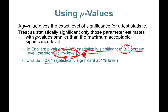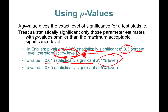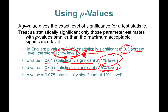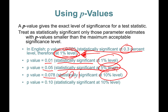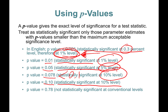A p-value of 0.04 — you can say B-hat is statistically significant at the 1% level. A p-value of 0.05 means this statistic is significant at the 5% level. A p-value of 0.078 is statistically significant at the 10% level, because it is less than 10% but greater than 5%. A p-value of exactly 0.10 is statistically significant at the 10% level.